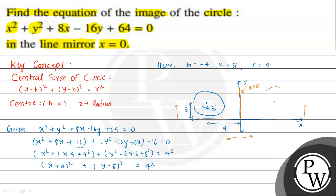The new center, which we call c-dash or c2, is at (4, 8) in the positive x direction. The original circle is c1 and the reflected circle is c2. The radius remains the same at 4 units, because the mirror image preserves size.